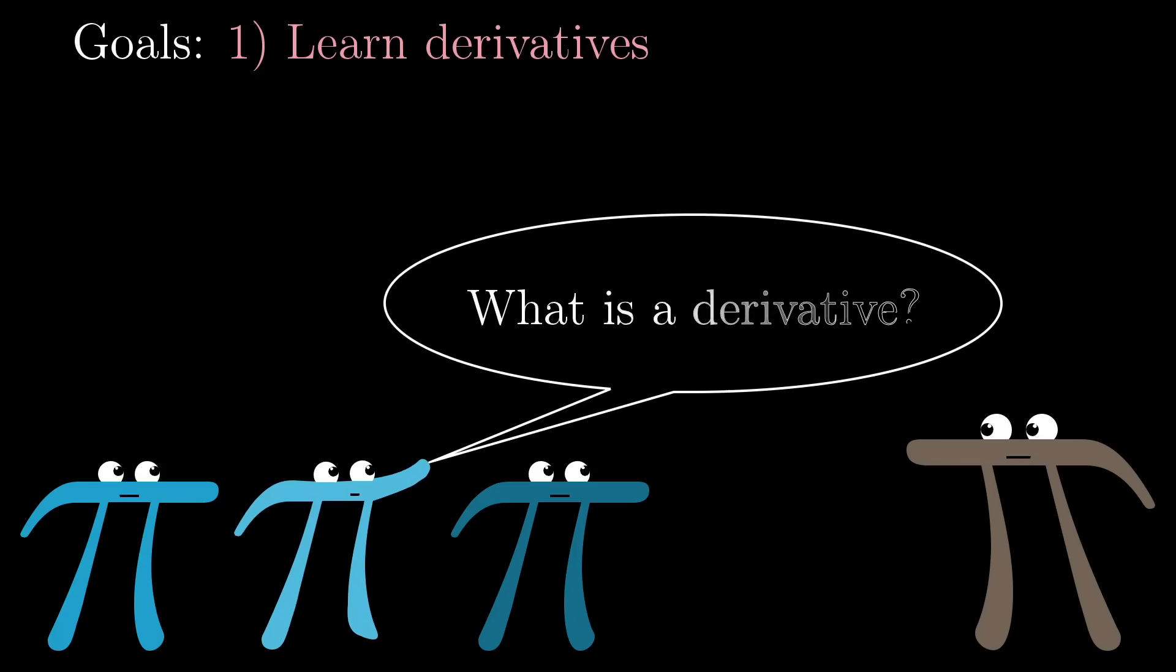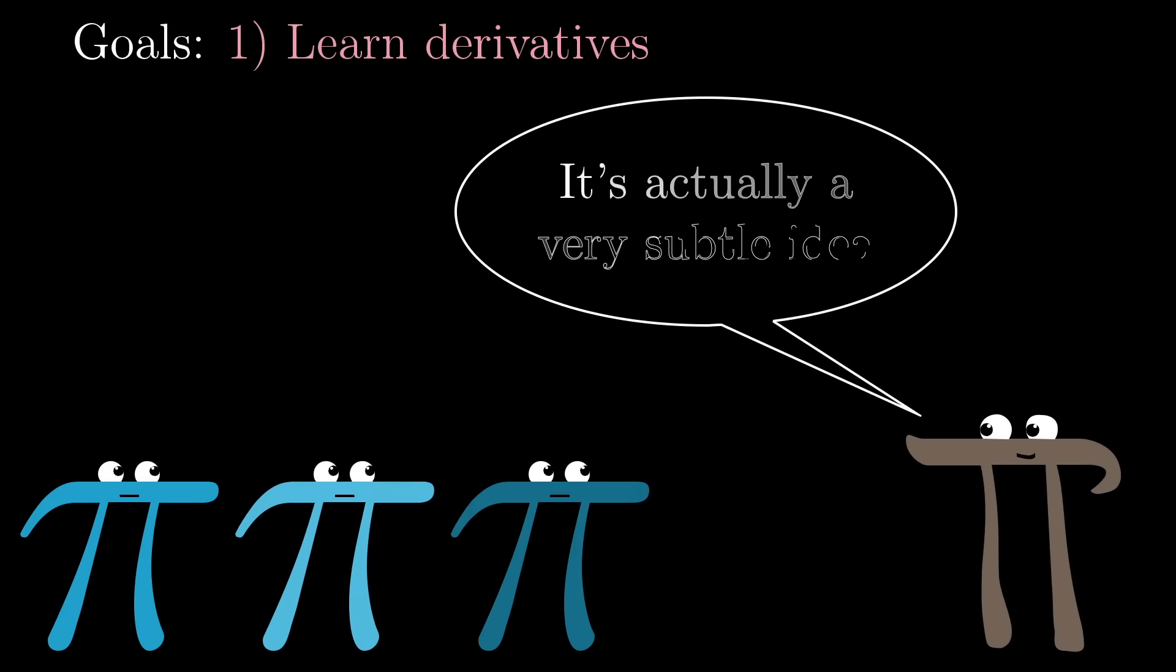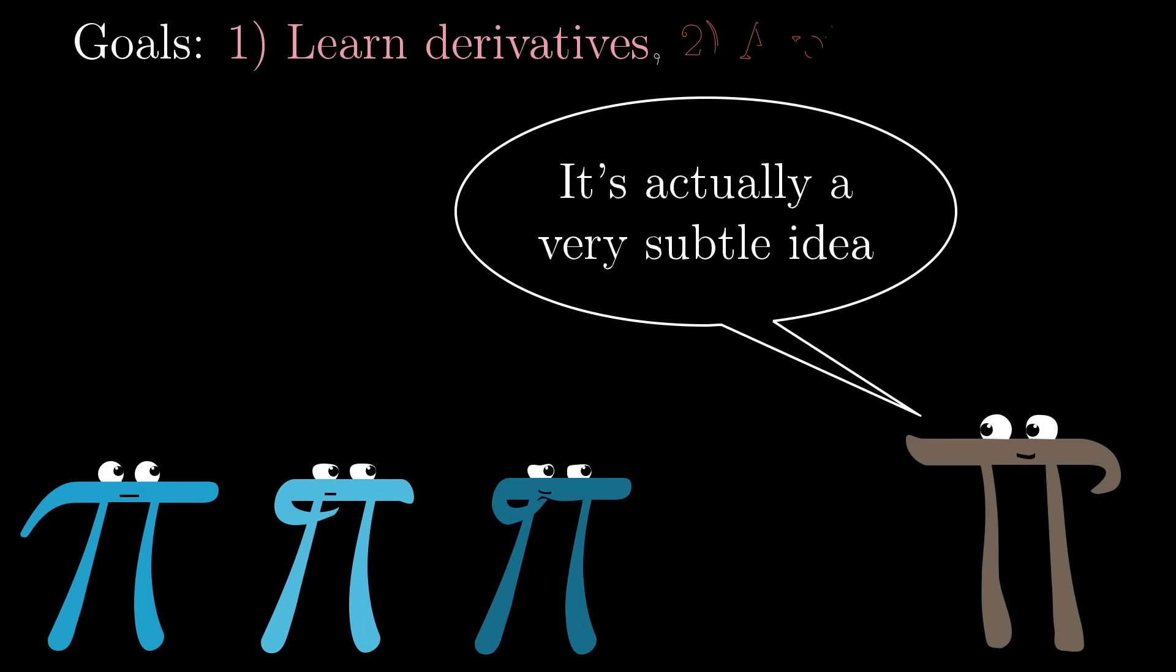The goal here is simple: explain what a derivative is. The thing is though, there's some subtlety to this topic and a lot of potential for paradoxes if you're not careful. So a secondary goal is that you have an appreciation for what those paradoxes are and how to avoid them.